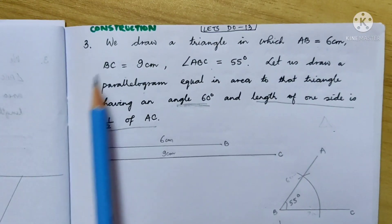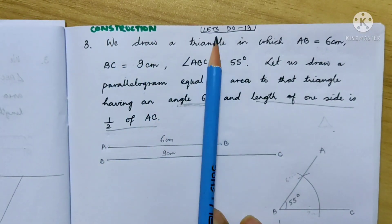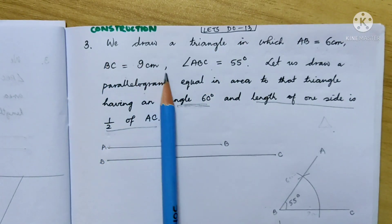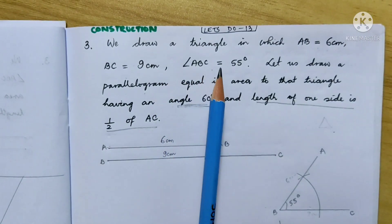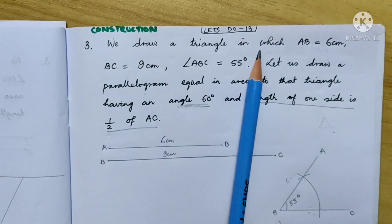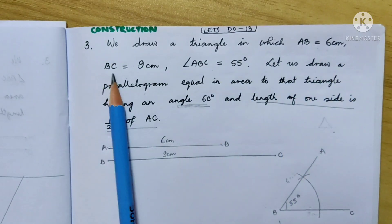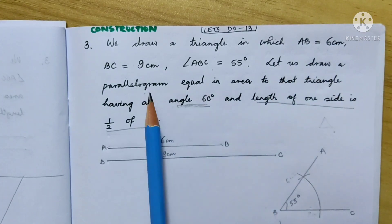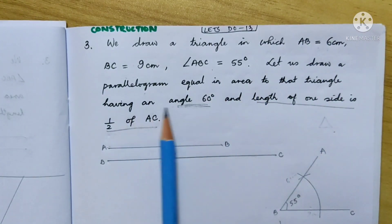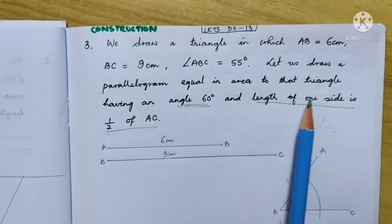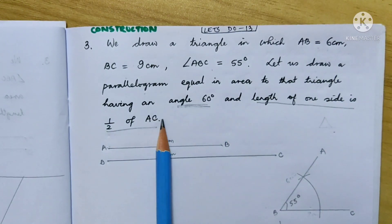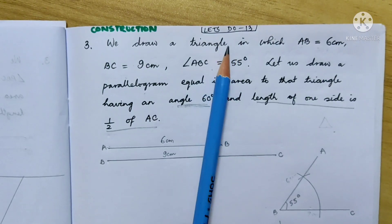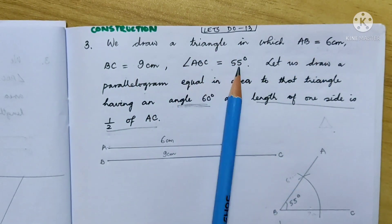Good afternoon children. Our topic for today is constructions. Let's work out question number 13, specifically question number 3. Since this question looked a bit difficult, I am doing it for you. We draw a triangle in which AB equals 6 cm, BC equals 9 cm, angle ABC equals 55 degrees. Then we draw a parallelogram equal in area to that triangle having an angle of 60 degrees, where the length of one side is half of AC. The question looks quite normal because you are given a triangle with its sides and one of the angles.